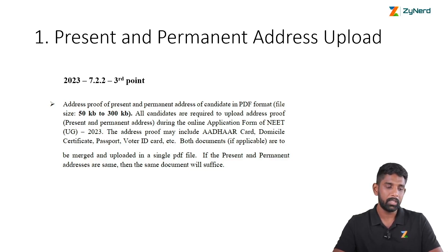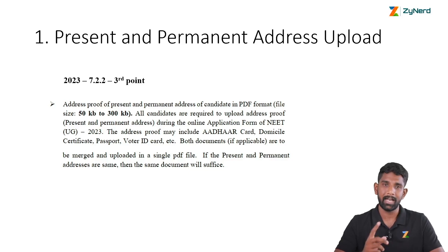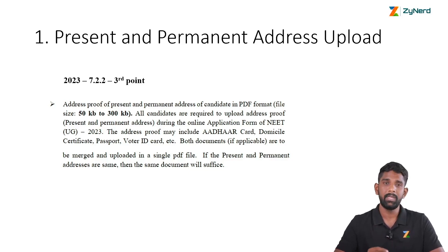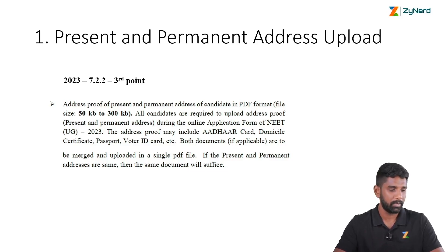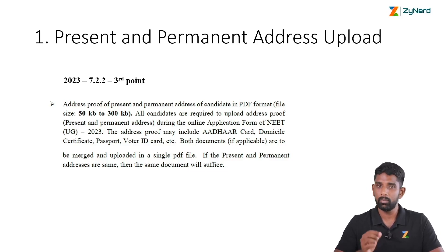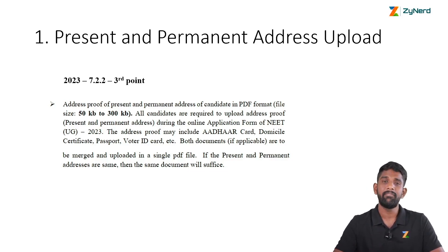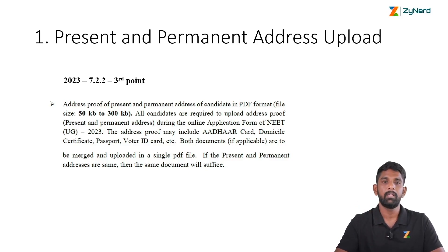Both the documents should be merged and uploaded as a single file. This should be in PDF format and the file size should be between 50 KB to 300 KB. If the present and permanent address are the same, then the same document will be enough for uploading.